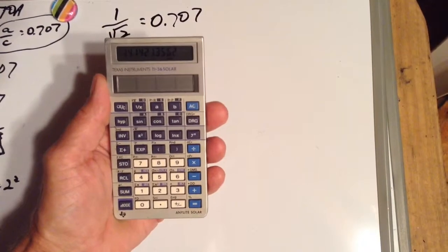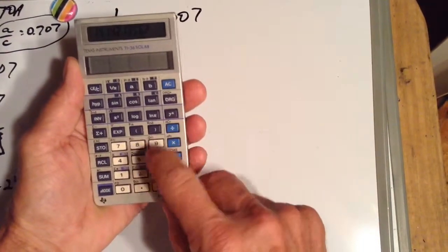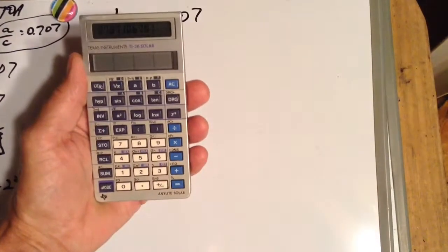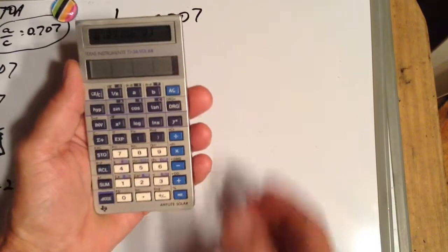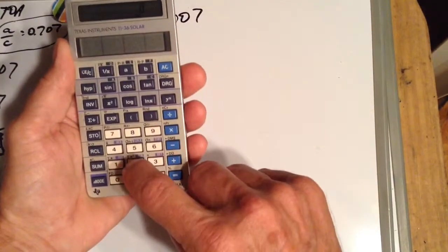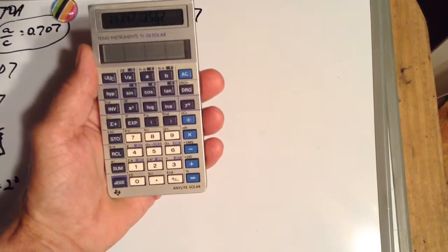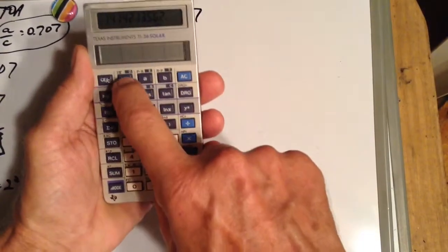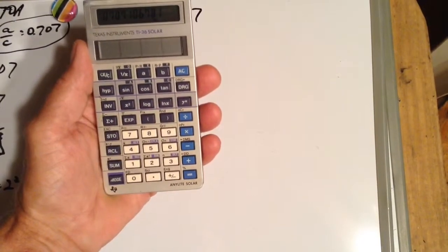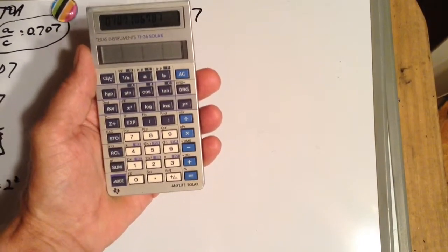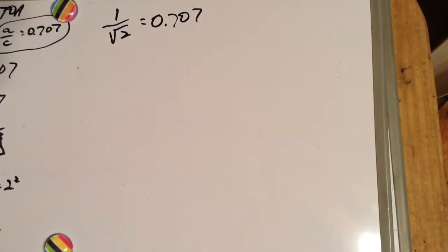And I said divided by 2 equals 0.707106781. What I should have told you is 2 inverse square root 2, that gives us 1.414. Then I should have hit the 1 over x, which also gives us 0.707106781. Sorry about the goof up.